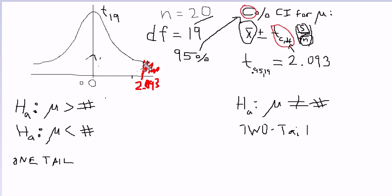So this is one rejection region, and the other one is a mirror image: negative 2.093. These are the two rejection regions. Any t-test statistic that falls either here or here would cause you to reject H0 at alpha of 5%.